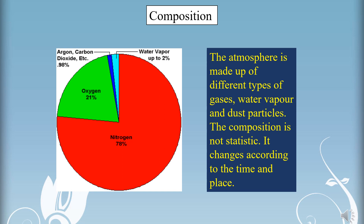Coming to oxygen gas — the amount of oxygen gas in the atmosphere is very little. It is limited to the oxygen layer, but it is very important. It protects living beings by absorbing the ultraviolet rays of the sun. If there was no oxygen gas in the atmosphere, there would not have been existence of living beings and plants on the earth's surface.